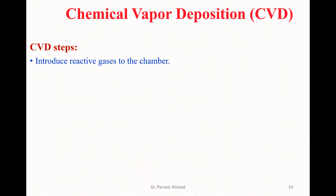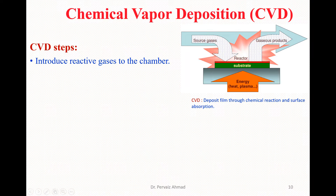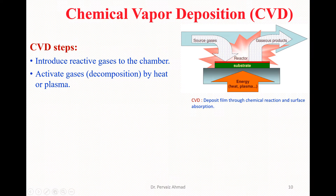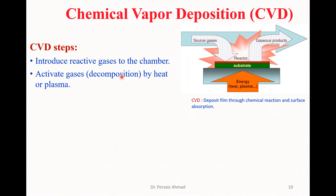First of all, we have to introduce the reactive gases to the chamber. As you can see here, we have a CVD deposited film through chemical reaction and surface adsorption. Then we activate the gases — that is, decomposition by heat or plasma. We basically introduce the reactive gases to the chamber, and inside the chamber we apply some sort of heating to activate the gases, performing decomposition, normally achieved by heating or by plasma process.